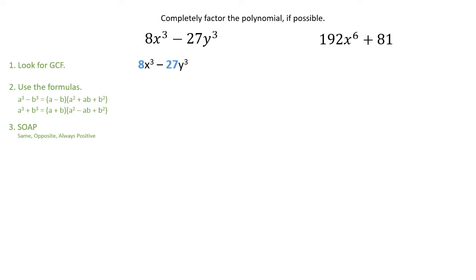So we have 8x cubed minus 27y cubed, and right now I'm looking for a GCF. I'm noticing that 8 and 27 don't have anything in common, so we can move straight to the formulas. I'm going to take 8x cubed and the 27y cubed, and I'm going to first pull my cube roots out. Those are the two pieces of information that I need. The cube roots.